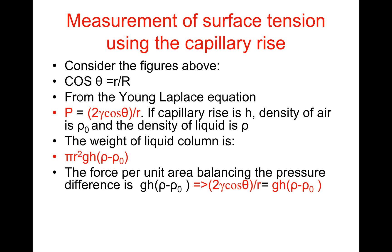The force per unit area balancing the pressure difference is GH(ρ - ρ₀). Which therefore implies 2γ cos θ/r equals GH(ρ - ρ₀). Rearranging, γ equals GH(ρ - ρ₀)r/cos θ.